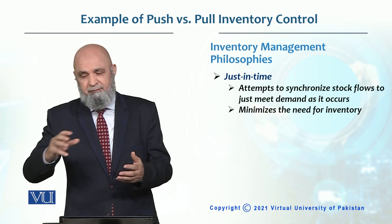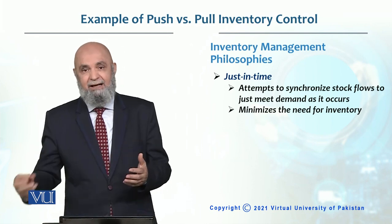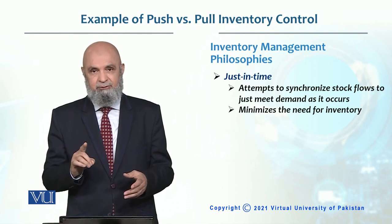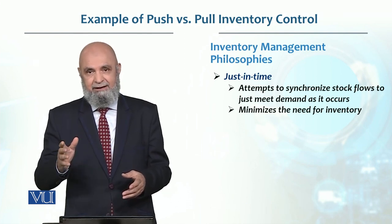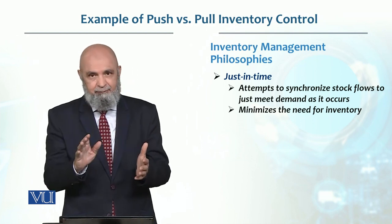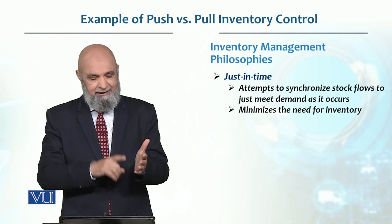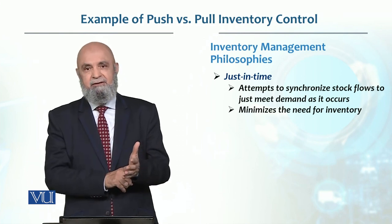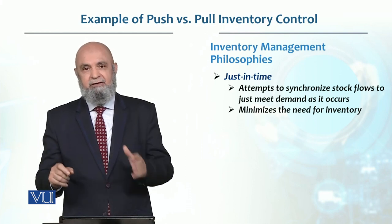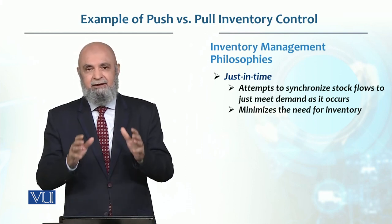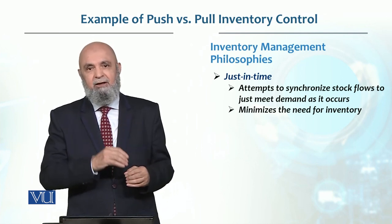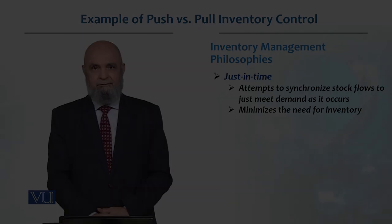In just-in-time, inventory is minimized — you produce exactly what the demand requires. It is not purely forecast-based; rather, the production quantity is determined when actual demand arrives, and only that quantity is produced at that time.